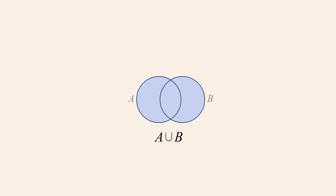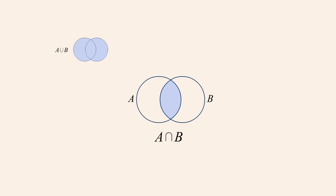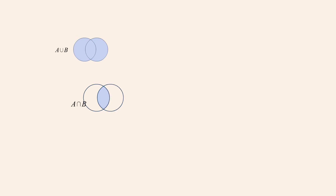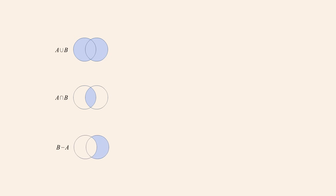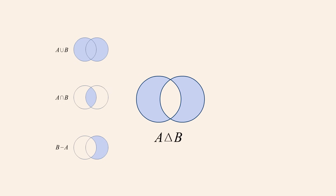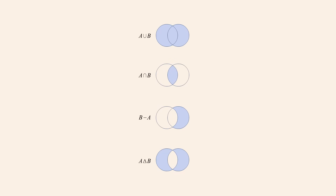So far, we have studied several set operations, including forming the union, the intersection, the relative complement, and the symmetric difference of sets. Each of these operations creates a new set containing some selection of elements from the operand sets.